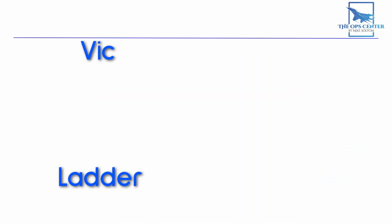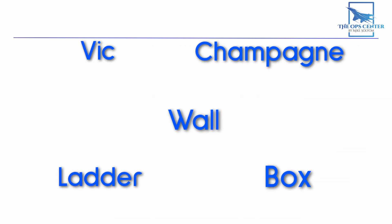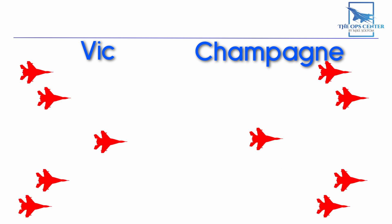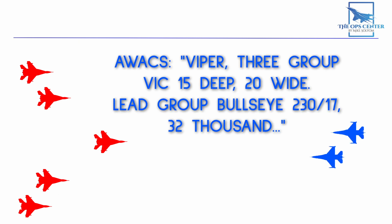Groups can also have specific formations. Vic and Champagne are V-shaped formations of three or more groups, with the difference being which way the opening faces. These come with dimensions describing the area they cover. For example: 'Viper, three-group Vic, 15 deep, 20 wide, lead group Bullseye 230, 17, 32,000.' This indicates the formation covers an area 15 miles deep and 20 wide, and the controller then goes through all groups normally.